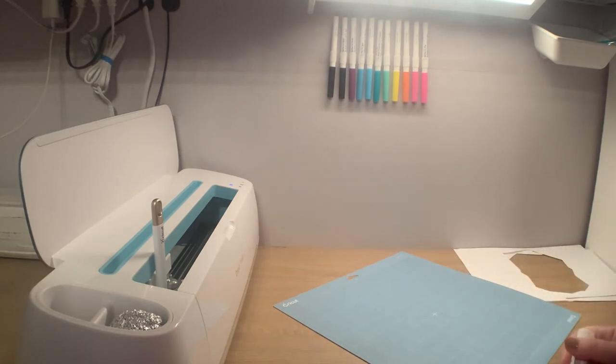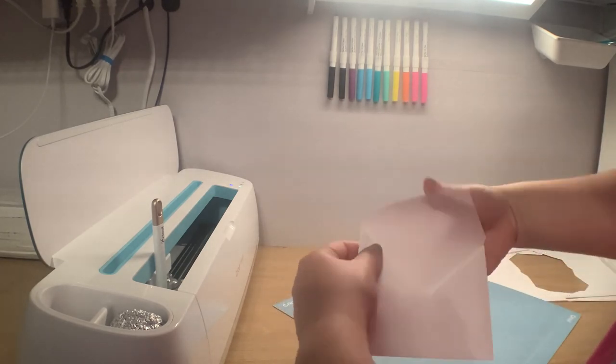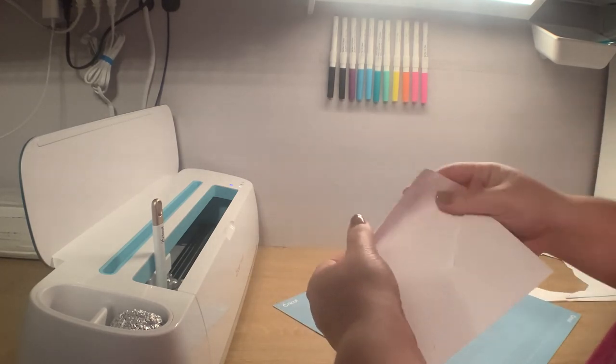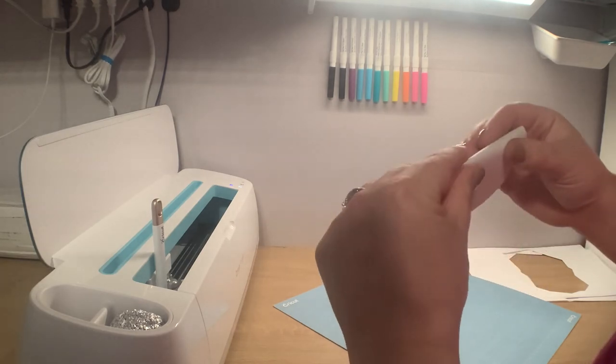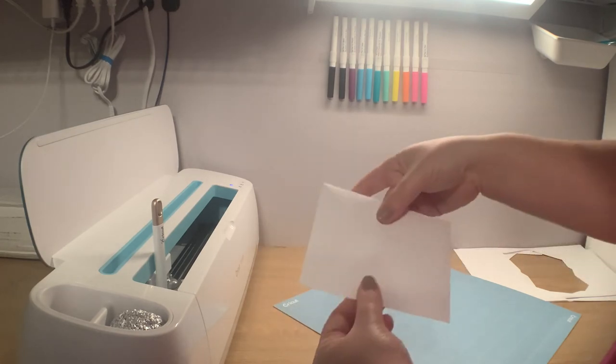So at this point, it is done until you're ready to stuff it with a card. Once you have the card in, you can fold that top down. Again, there's a score line for that as well. And then you can glue it shut, put it in the mail.